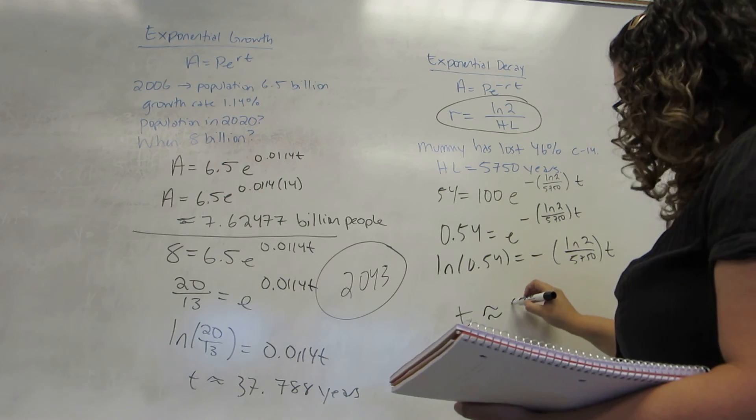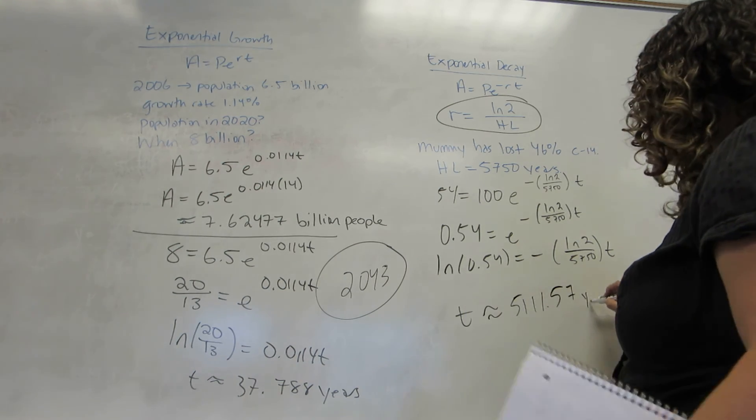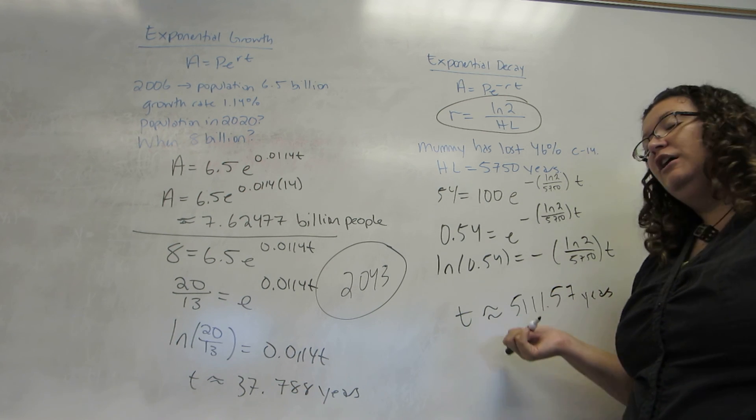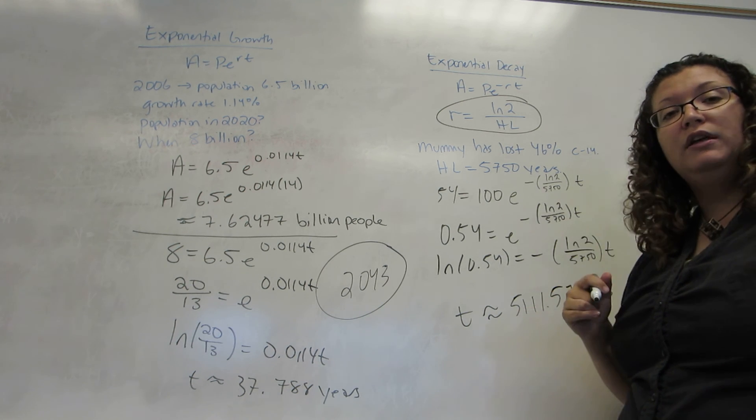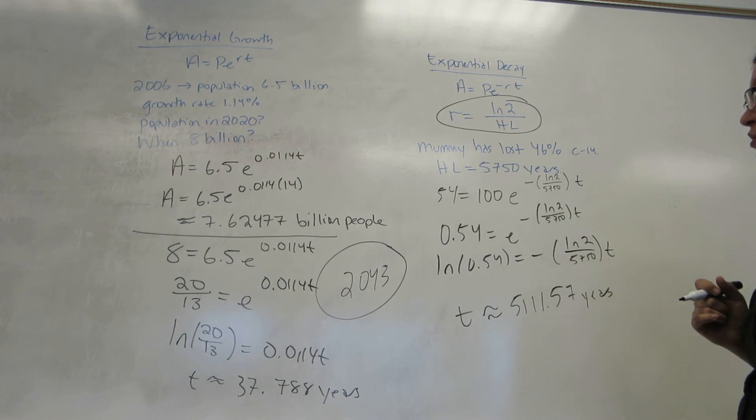And then T is what we get when we divide both sides by this fraction. So, we end up with 5,111.57 years. And that actually makes sense. A 5,000-year-old mummy would put it living in about 3,000 B.C. at the height of the Egyptian kingdoms.